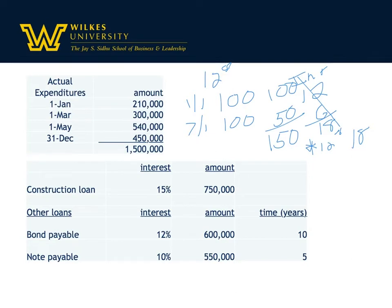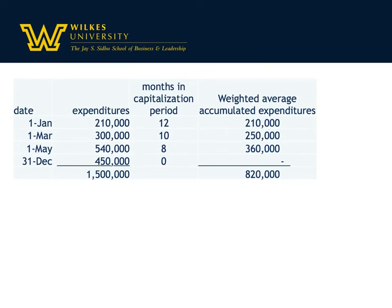We're simply readjusting the interest because this makes for an easier computation. That's why we take the expenditures given at the beginning of the problem and concern ourselves with the months in the capitalization period. Starting at January 1st, we've got 12 months, so time is 12 divided by 12 — the entire year. On March 1st, we have 10 months, so 10 twelfths of a year. On May 1st, we missed the first four months, so we have 8 twelfths of a year. On December 31st, even if we spent $450,000, we'd have zero interest because it was the last day of the year.